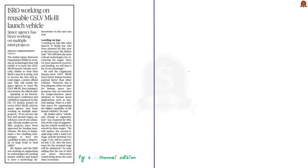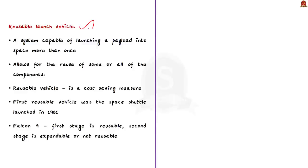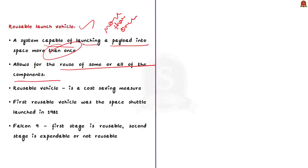Now let us look at this article: ISRO is apparently working on a reusable launch vehicle for GSLV Mark III. A reusable launch vehicle is a system capable of launching a payload into space more than once, allowing reuse of some or all components. This is the opposite of an expendable launch system, which can be used only once. Since rocket components and assembly are expensive, reuse is a cost-saving measure. The first reusable vehicle was the Space Shuttle launched in 1981, which launched like a rocket and returned to Earth like a glider. In recent times, SpaceX has mastered this technology with the Falcon 9, whose first stage is reusable while the second stage is expendable.